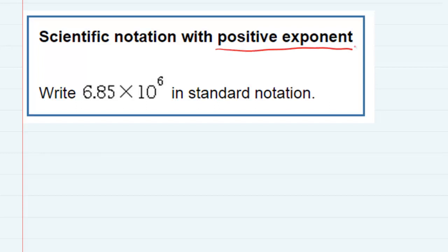Since it has a positive exponent here, 6, this is going to be a pretty large number. Again, positive exponents in scientific notation represent large numbers. So I know I'm going to have to move that decimal place six times. The question is which way?